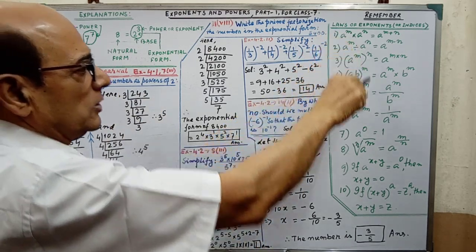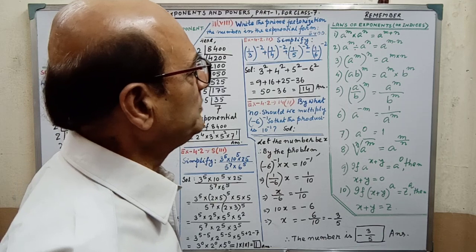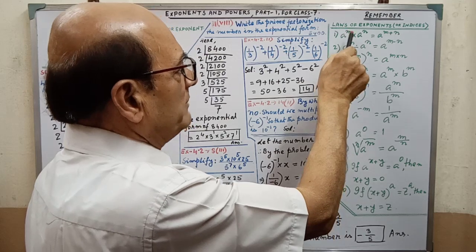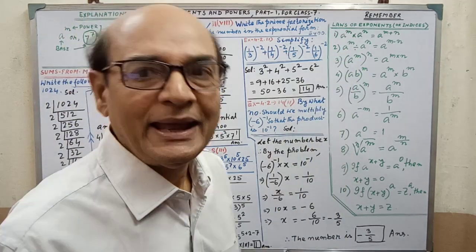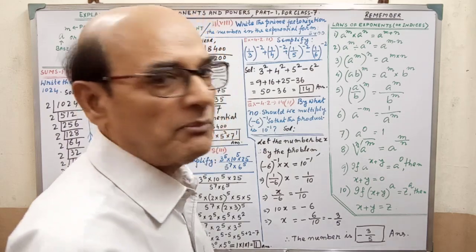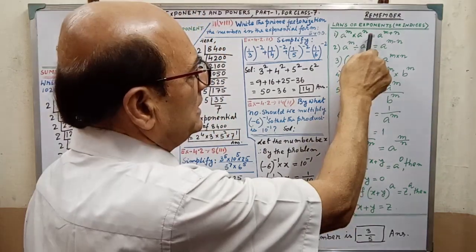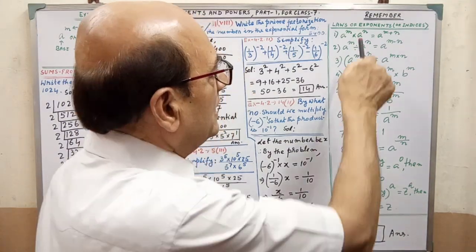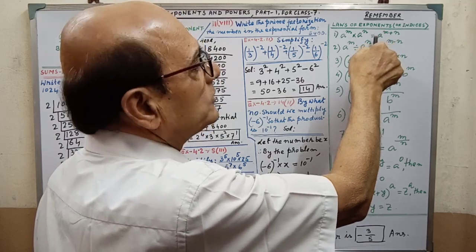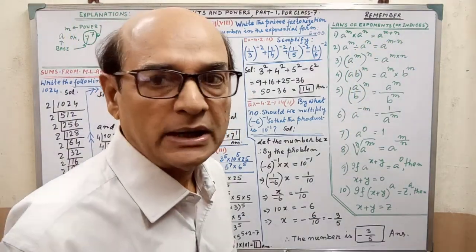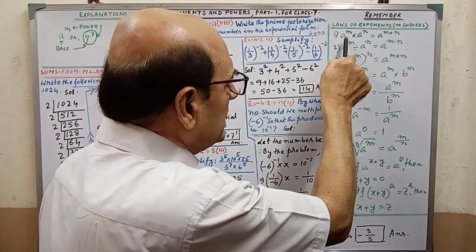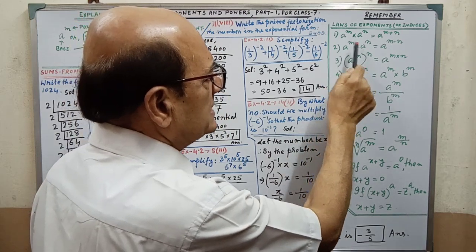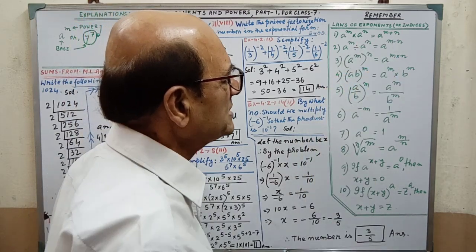There are laws — 10 laws you have to understand clearly and remember. A to the power M into A to the power M; in place of A, any natural number may be used, and similarly for M. If you see the bases are the same, then the powers will be added. If the bases are the same in case of division, the power will be subtracted.